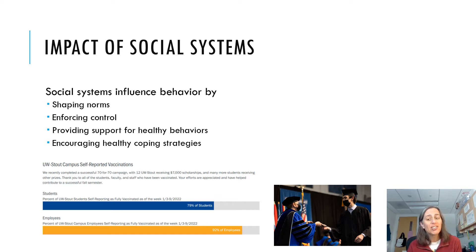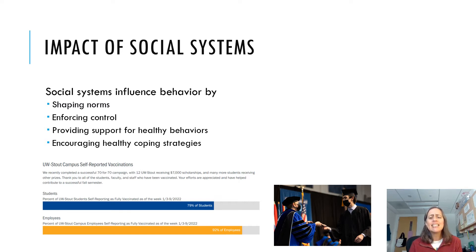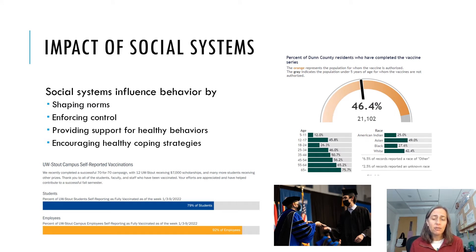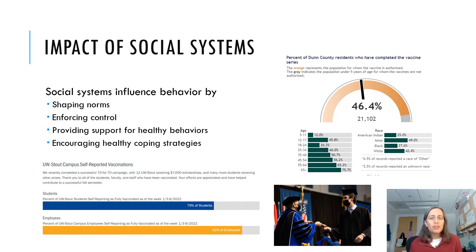The high vaccination rate is in large part due to those things and also the education level of the people who are members of the Stout community. Interestingly, the vaccination rate among Stout students and employees is significantly different than the general vaccination rate in Dunn County — only 46% of Dunn County residents are fully vaccinated, whereas at Stout we have twice as high a vaccination rate. It's a different social system, a different norm. This is just more of what we do here — really, really powerful.